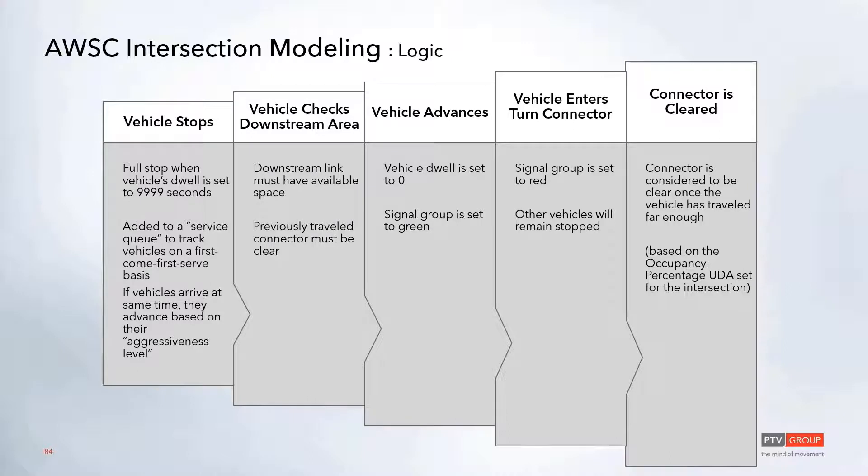Once that vehicle has traveled far enough through that connector to consider it to be cleared, based again on that occupancy percentage UDA, at that point, then the next vehicle can also start to check its downstream link. And then if that's clear, it'll be allowed to advance from there.